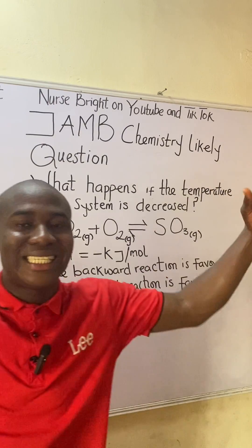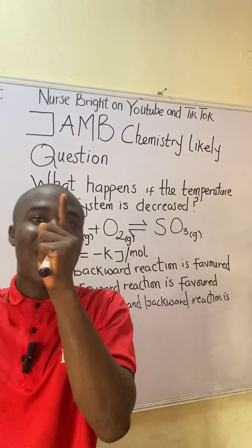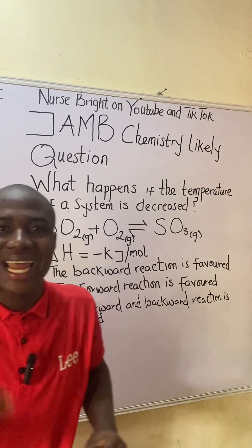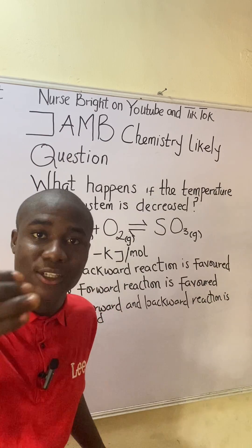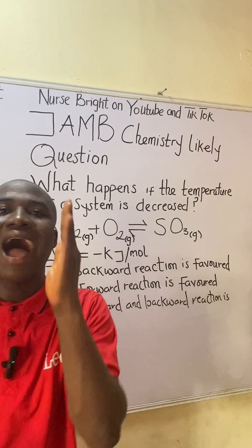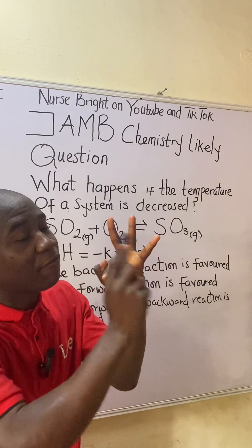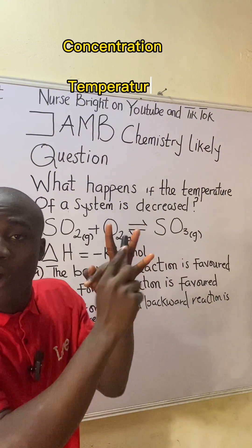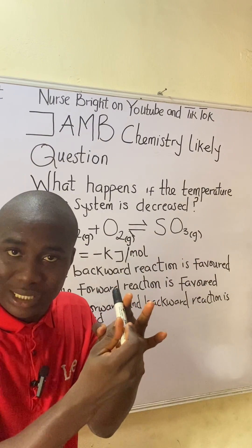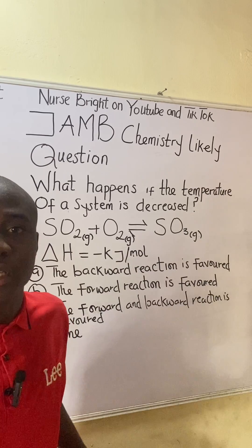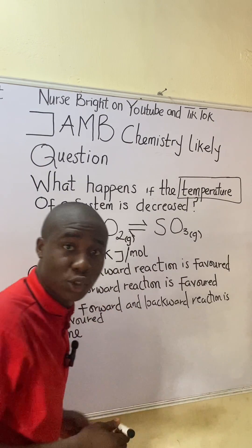In the topic chemical equilibrium, we'll use 'reaction' and 'system' interchangeably. We have various external constraints that affect a reaction or system at equilibrium. There are three of them: the first is concentration, the second is temperature, and the last is pressure. In this practice question, you've already seen one of the constraints, which is temperature.